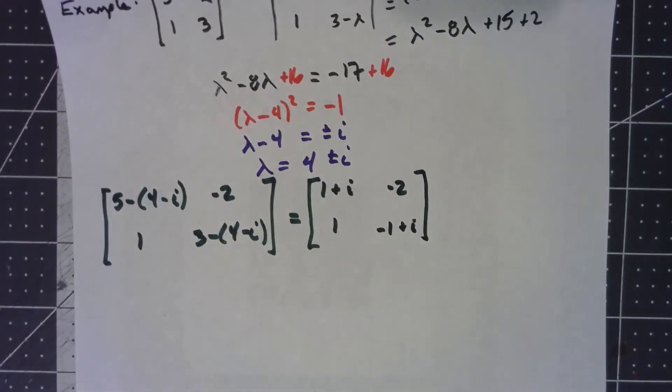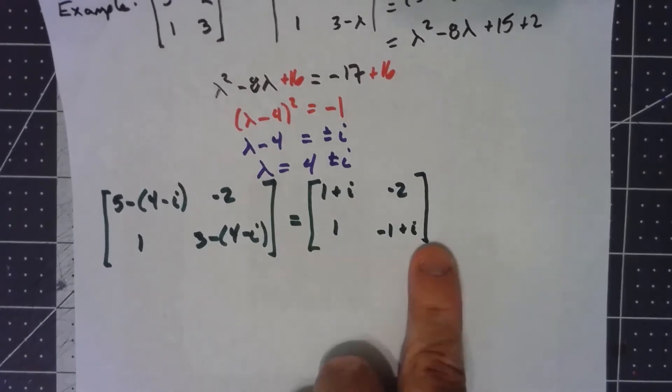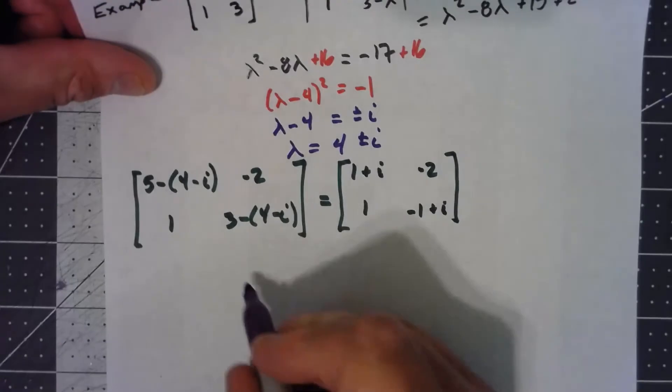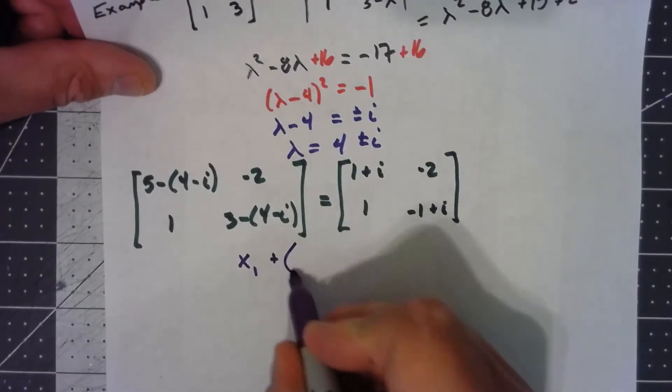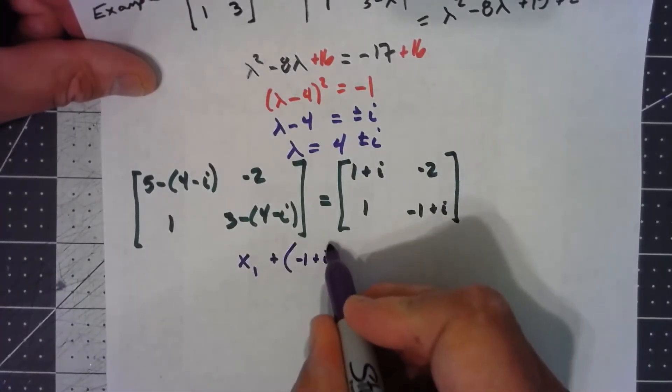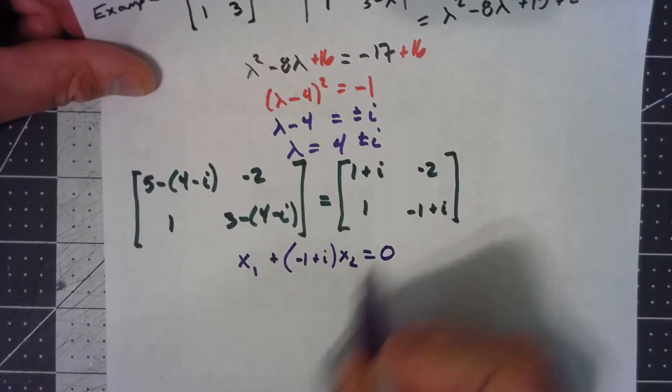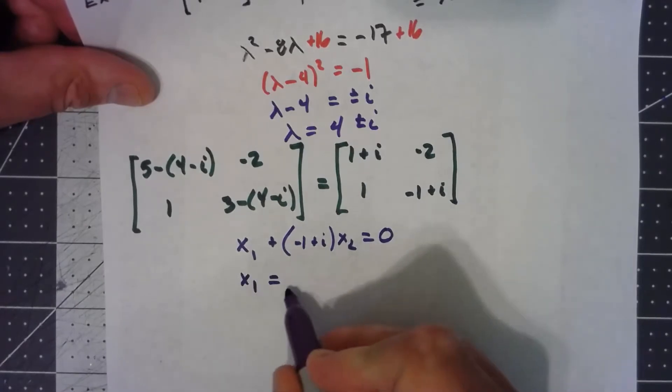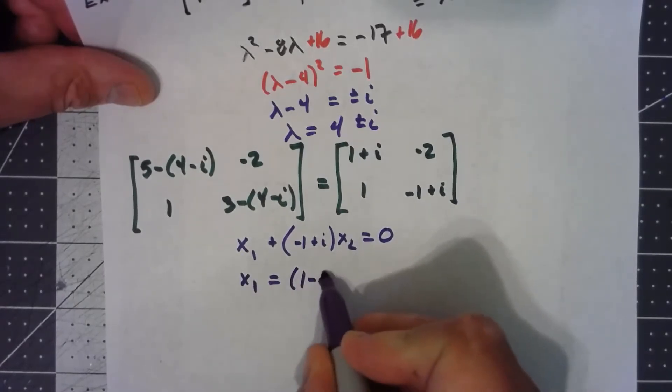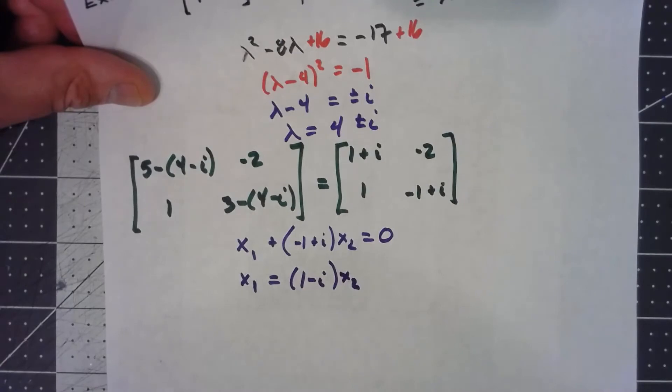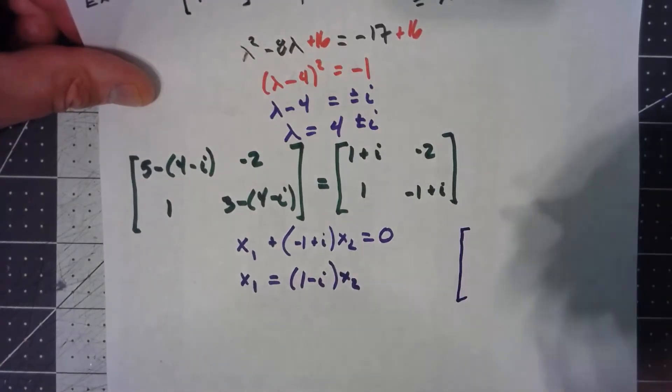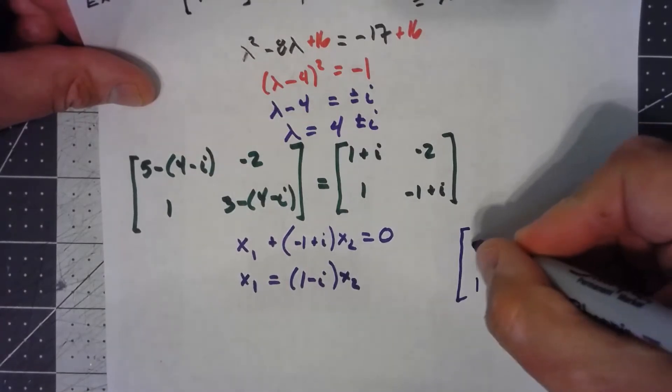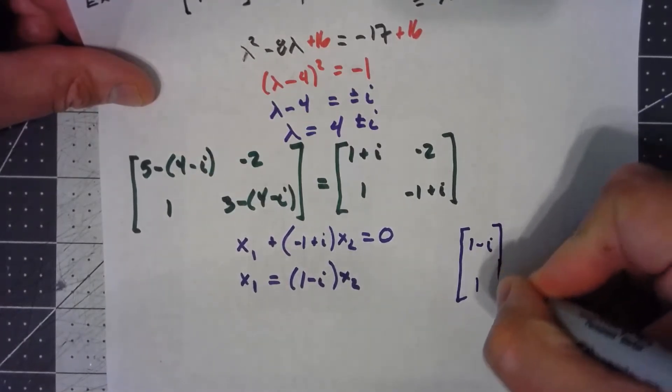As I did a couple of times in the last video, I'm just going to worry about the bottom row there. So x₁ + (-1+i)x₂ has to be 0. So that means that x₁ equals (1-i)x₂. And so I can take as an eigenvector, I can take 1 for x₂ and 1-i for x₁.